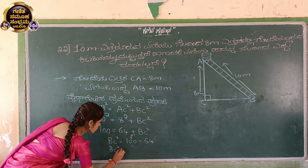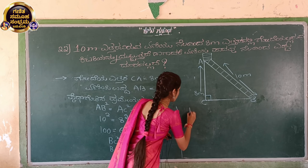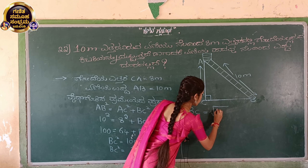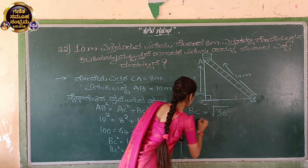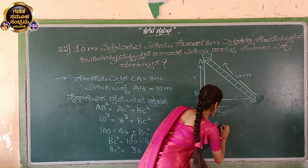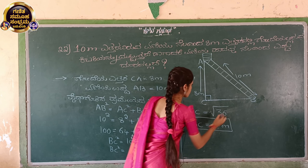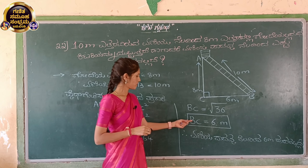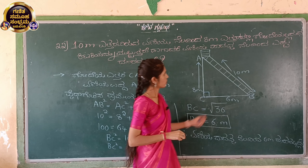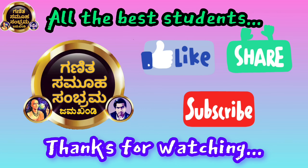BC squared is equal to... 3 or 4... 6. So BC squared gives us 6. 6, 2, 3, 2. That is 3. Thank you.